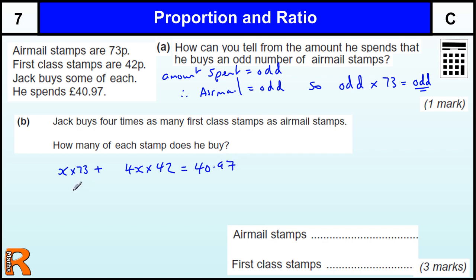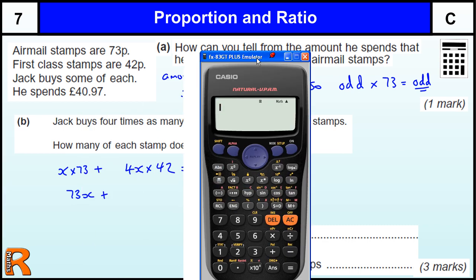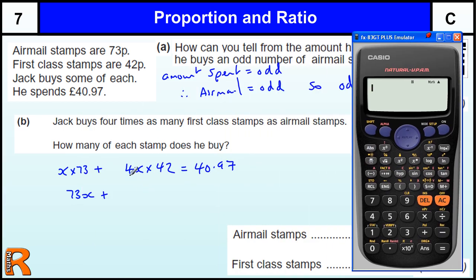So we end up with, if I tidy this up a bit, 73x plus 42 times by 4, which is going to be 168. Let's get the calculator out. So we're getting ready. So 4 42s are 168x equals 40.97. So add those two together, 73 plus 168, we get 241 x's equals,